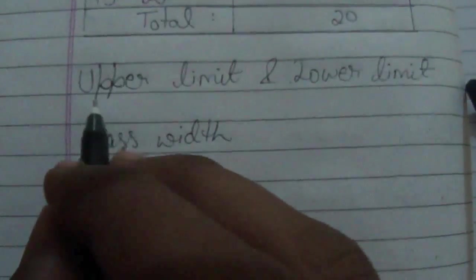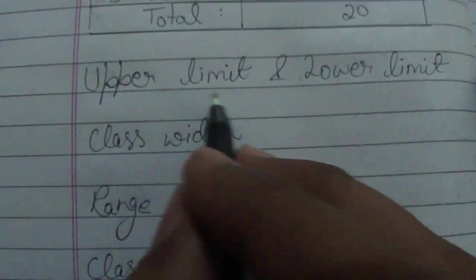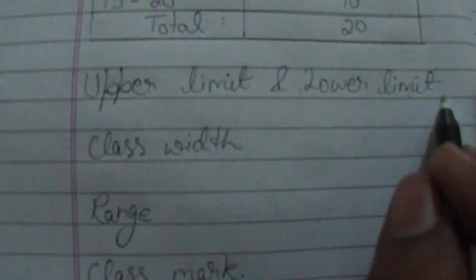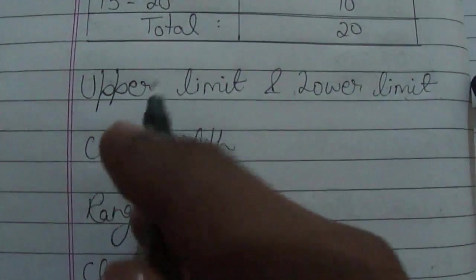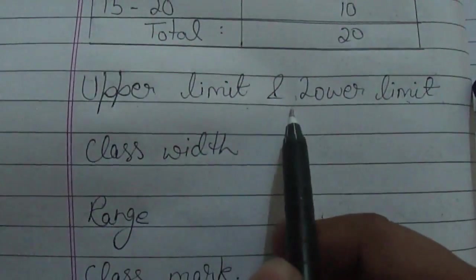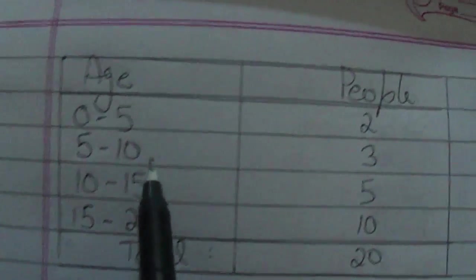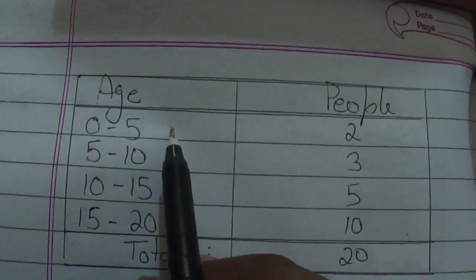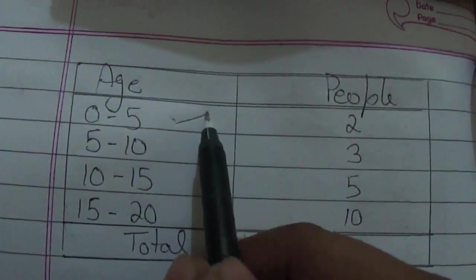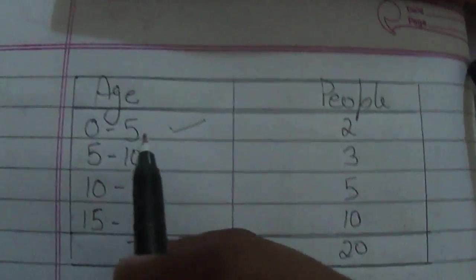What is an upper limit and lower limit of a class? Suppose we are asked to find the upper limit and lower limit of class 0 to 5. So we get this one. What would be its upper limit?